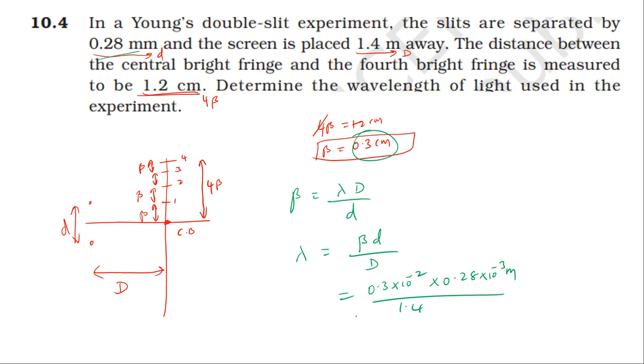Let me substitute the values. This gives us 600 nanometer, which is 600 times 10 power minus 9 meter, and that's it.